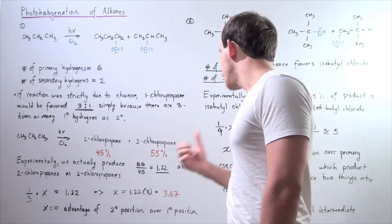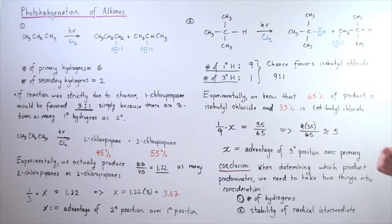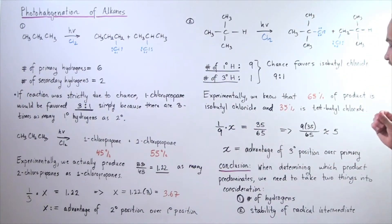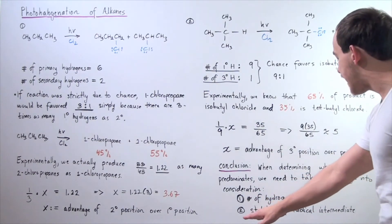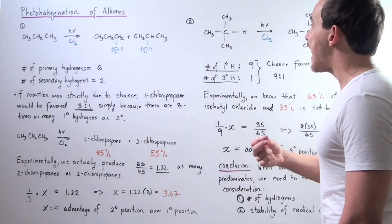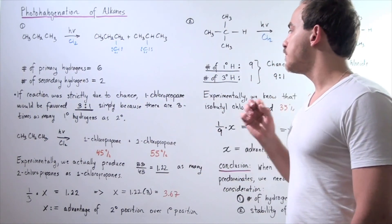So, what is our conclusion? Well, when determining which product predominates, we have to examine two important things. We have to count the number of H's and compare them and then we also have to figure out which one is the more stable or has the more stable radical intermediate.